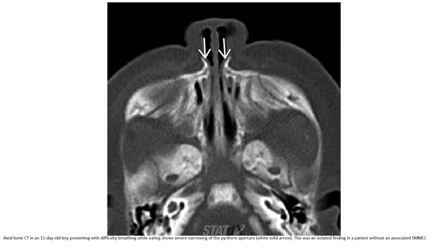Axial bone CT in an 11-day-old boy presenting with difficulty breathing while eating shows severe narrowing of the pyriform aperture. This was an isolated finding in the patient without an associated solitary median maxillary central incisor.